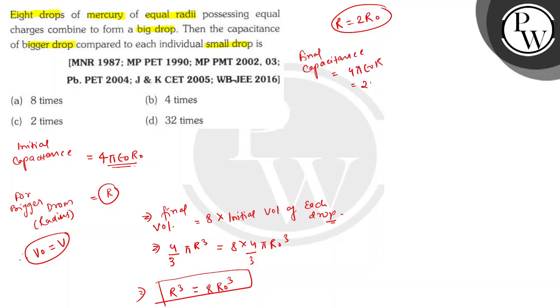Final capacitance will be 4πε₀r, which is 2 into 4πε₀r₀. From this relation we got that C equals to 2C₀.